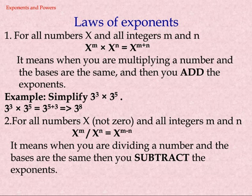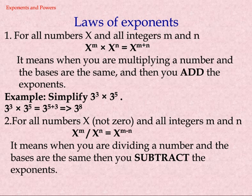Laws of exponents. Law 1: For all numbers x and all integers m and n, x^m × x^n = x^(m+n). It means when you are multiplying numbers and the bases are the same, you add the exponents. Example: simplify 3 power 3 into 3 power 5. 3^3 × 3^5 = 3^(5+3) = 3^8.